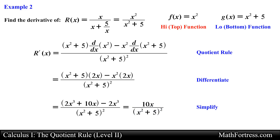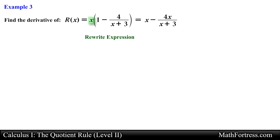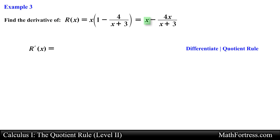Let's try a slightly more challenging example. Find the derivative of r equals x times the quantity 1 minus 4 over x plus 3. It seems that we have a product of two functions, but also notice that we have a quotient of two functions inside the expression. Before you attempt to find the derivative of any function, it is important to rewrite the expression into a derivative-friendly form. For this function, let's distribute the variable x to each term, which gives us an expression that becomes slightly easier to differentiate. In this way we now have to find the derivative term by term, and the derivative of the second term is a perfect candidate for the quotient rule.